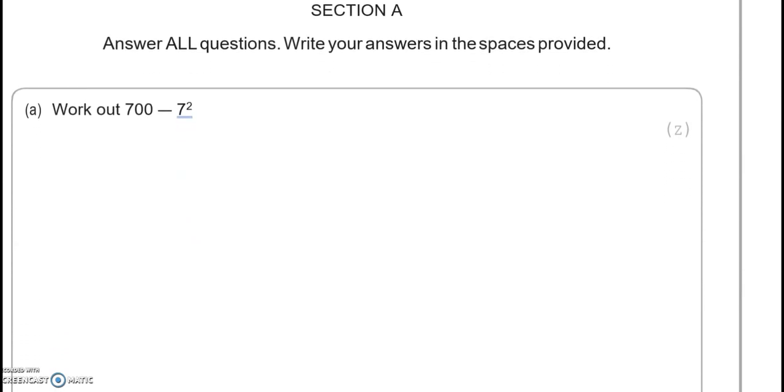Answer all questions. Write your answers in the spaces provided. Work out 700 take away 7 squared. We know through BIDMAS that we need to do 7 squared first. 7 squared is 7 times 7, which equals 49. So we're going to do 700 take away 49. Now we can't use a calculator here, so we're going to do it together.